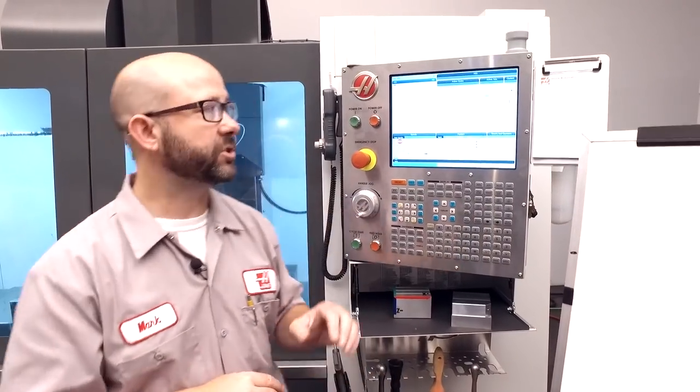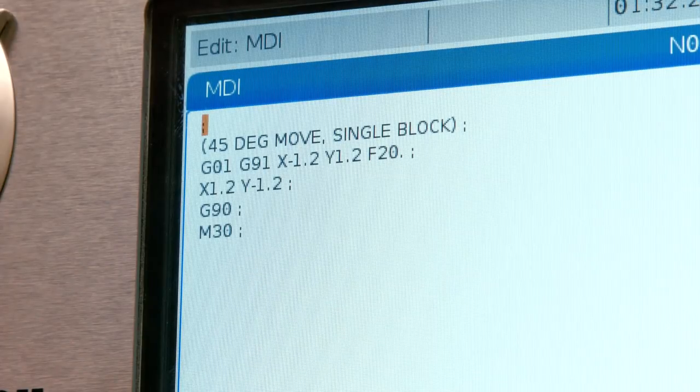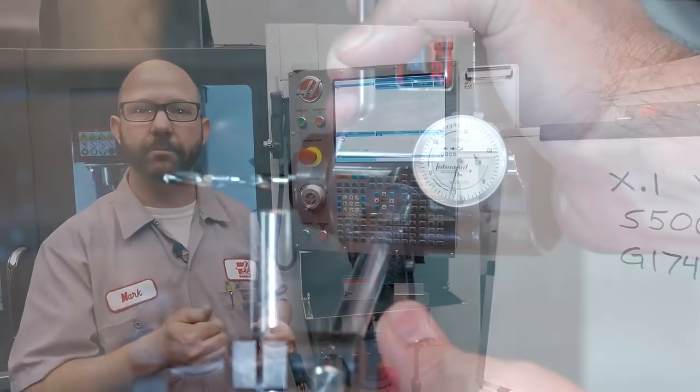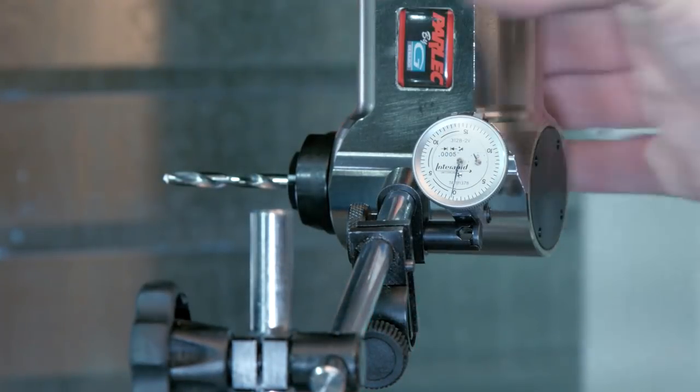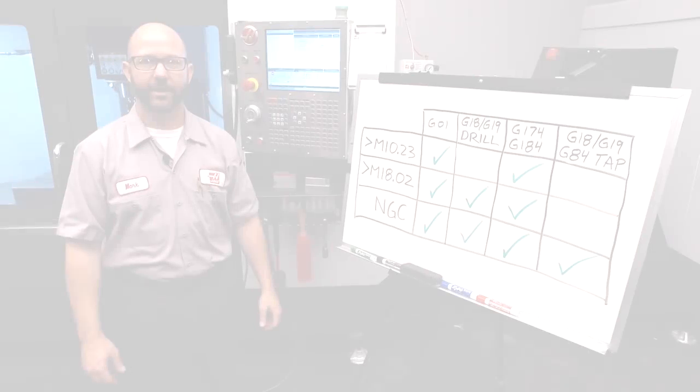Now, how do you set up an angled head like this, the one that we've got, at 45 degrees? It's pretty simple. All you have to do is go into MDI and program an XY move at 45 degrees. Single block through that program with your indicator against the side of the angled head, and dial it in, just like you would a vise.